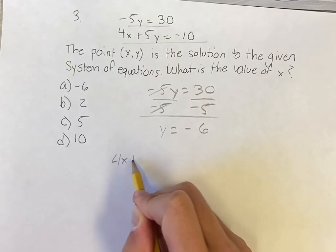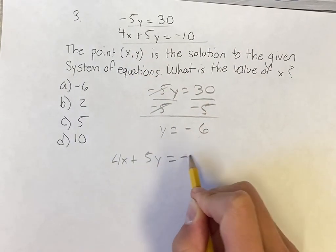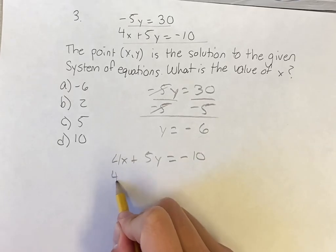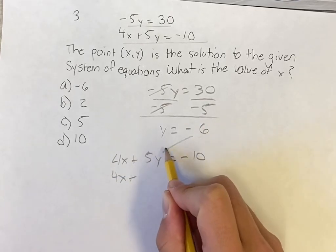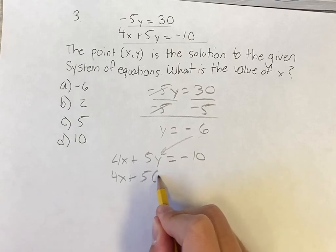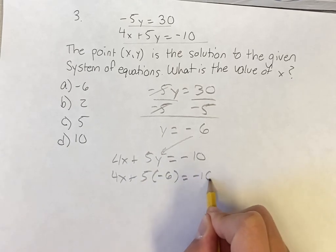So doing that, we have 4x plus 5y is equal to negative 10, just rewriting that. Now we can plug in negative 6 for y right there, so we have 5 times negative 6. That's going to be equal to negative 10.